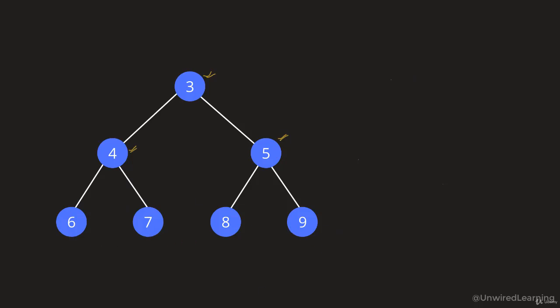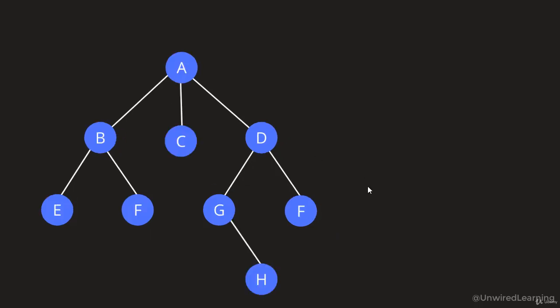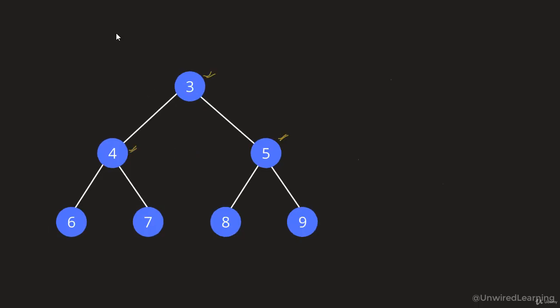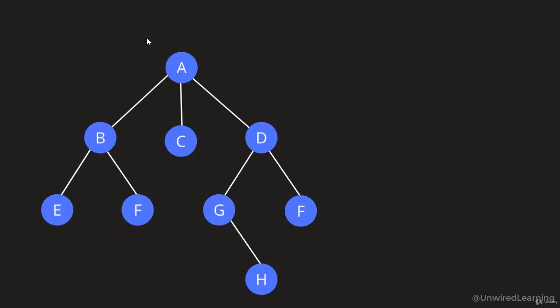Now let us talk about another diagram. Is this a binary tree? No. Why? Because here we have 3 children. That means one particular node cannot have more than 2 children — maximum we can have is 2, either 0, 1, or 2. So this is the important concept of binary tree. All the other trees we have been referring to — like this one — are just general trees.